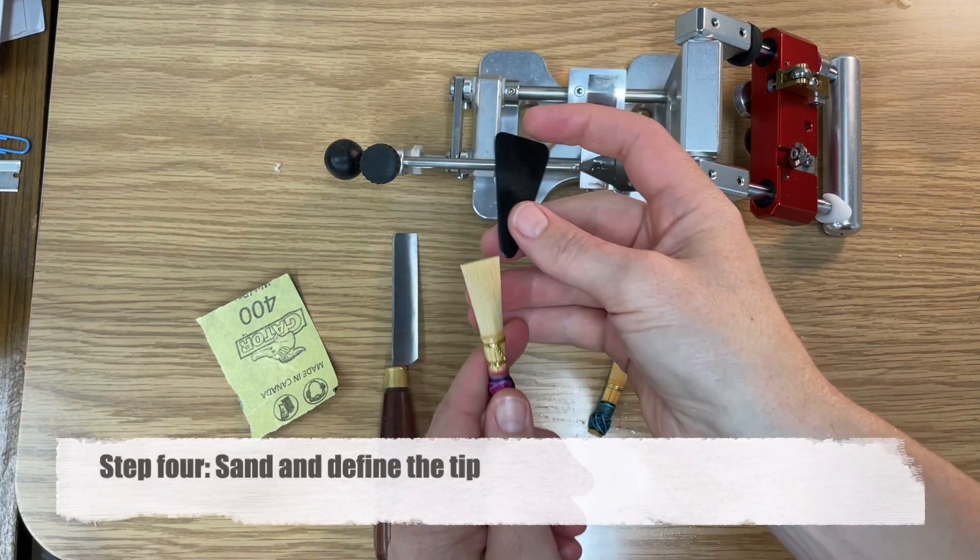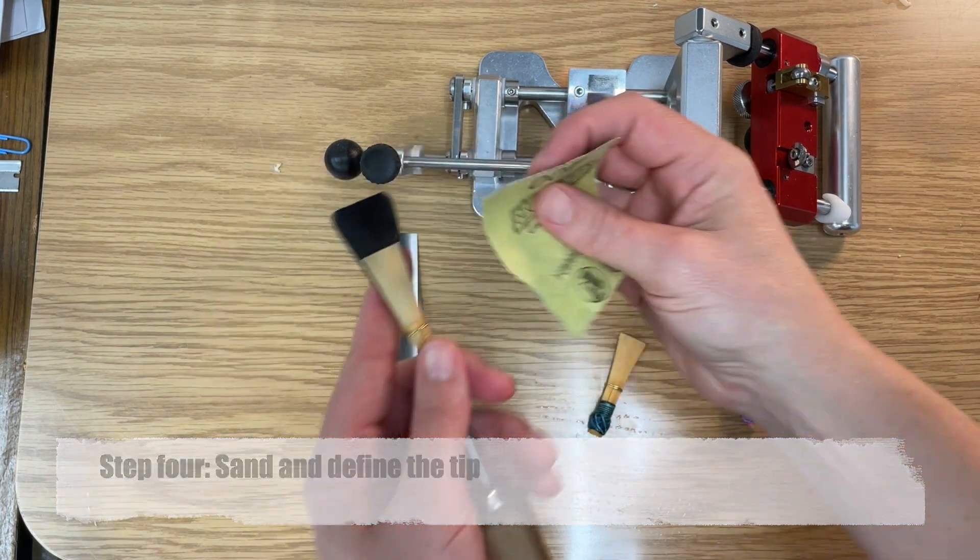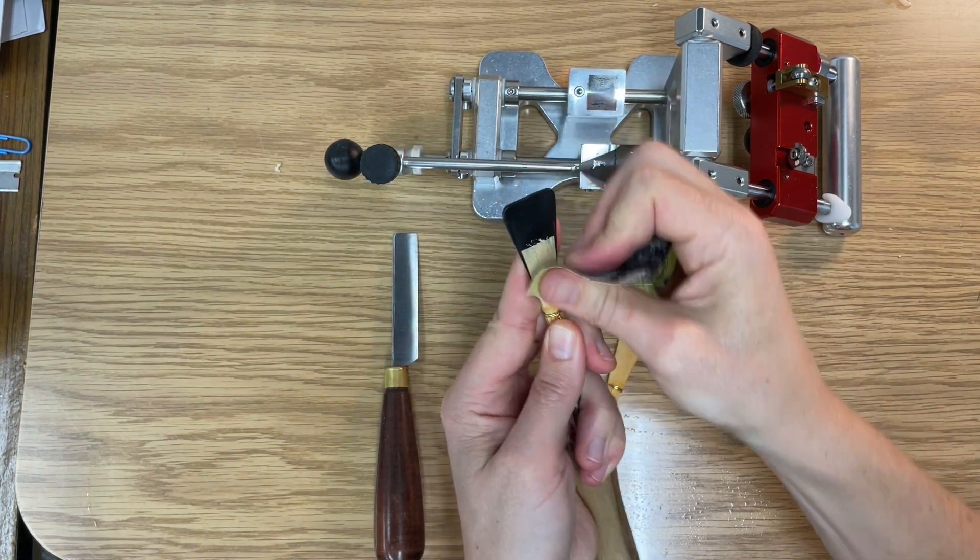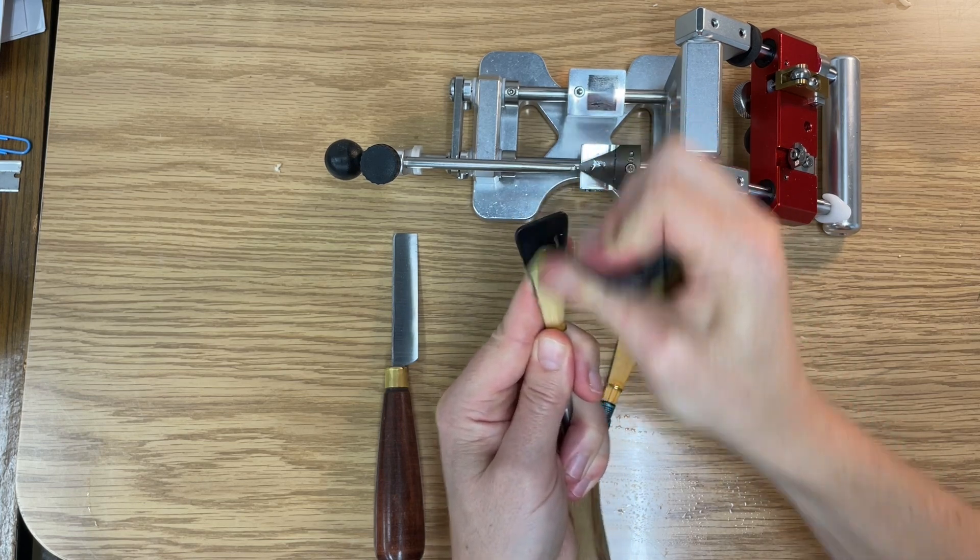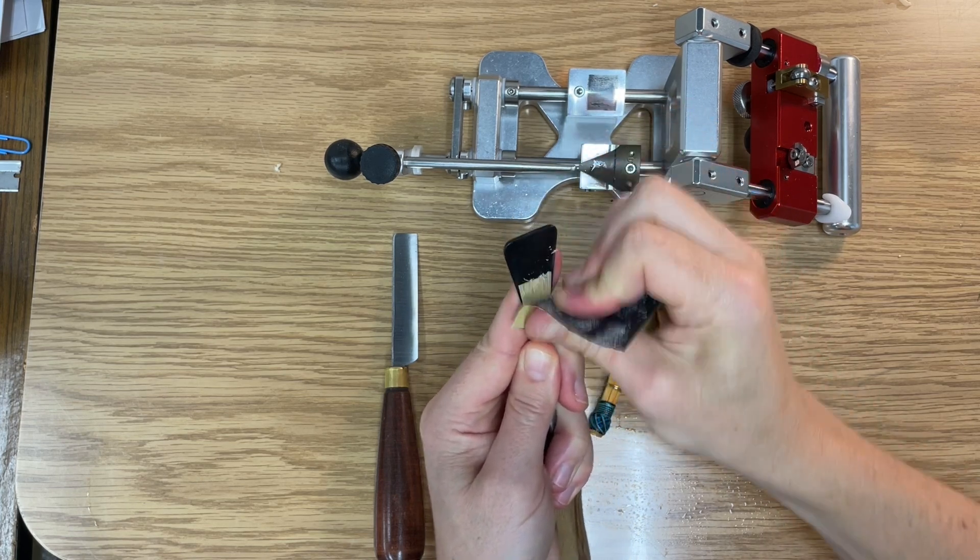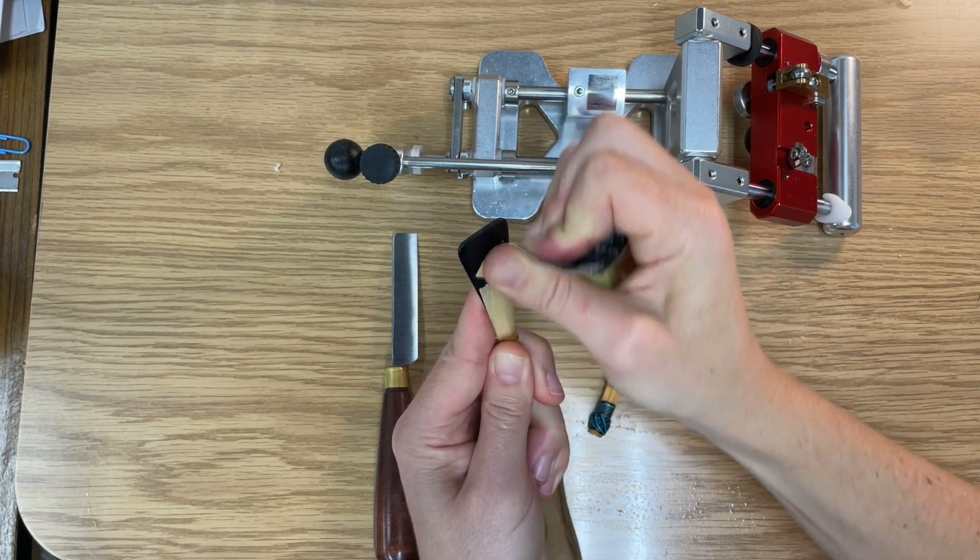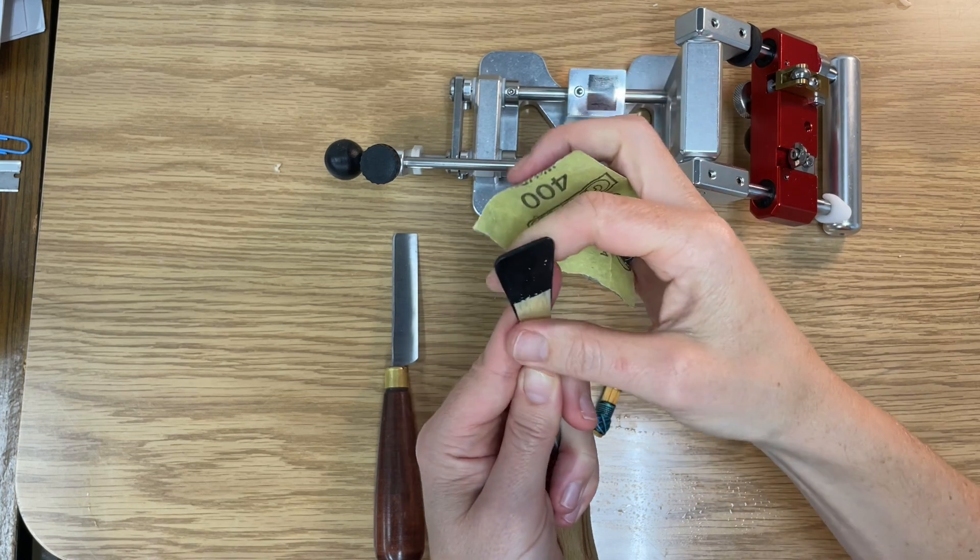So the next step that I like to do before I even play on them is to make sure I sand the reed to get it nice and smooth. So this is 400 grit sandpaper. Anything lower in number is going to take off a lot of cane, but higher in number is going to take a little longer. So I'd say from 400 to 600 is probably good for this step.